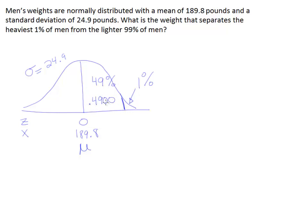Now, remember, it's this area that's associated with this z-score, so I can't look up the 1%. I have to look up the 0.4900 on my z-table. So let's go to our z-table and figure that out.